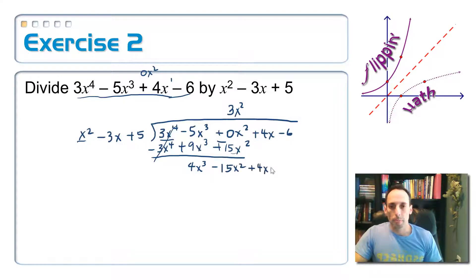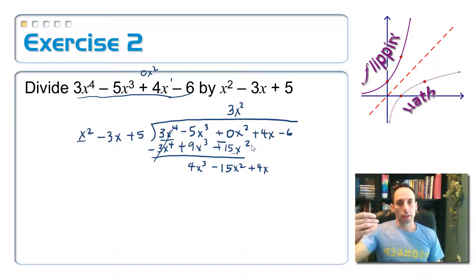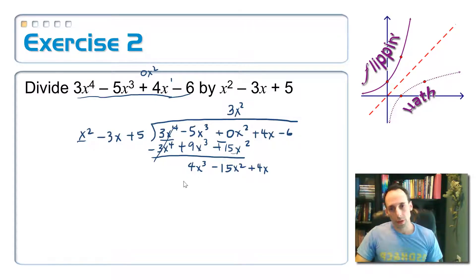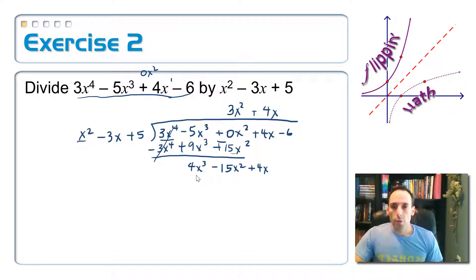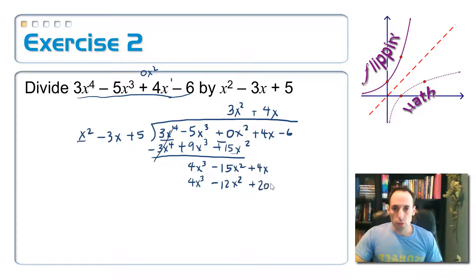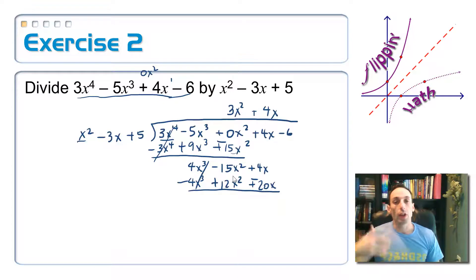And bring down my 4x. Now again I ask myself, how many times does x squared go into 4x cubed? What do you have to multiply x squared by to get 4x cubed? I need to multiply it by 4x. I put a plus sign in between — it's plus 4x. So now distribute the 4x times everything in the divisor: 4x times x squared is 4x cubed, 4x times negative 3x is minus 12x squared, and 4x times 5 is plus 20x. Draw my line and subtract — minus, plus, minus — changing the signs. Those terms cancel.